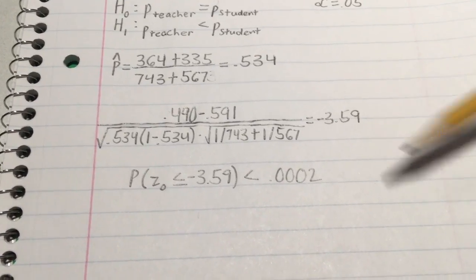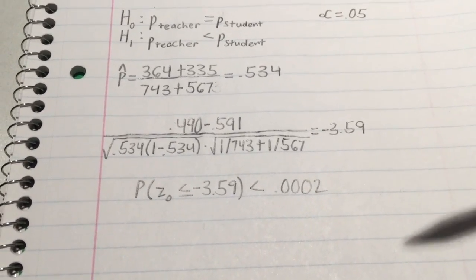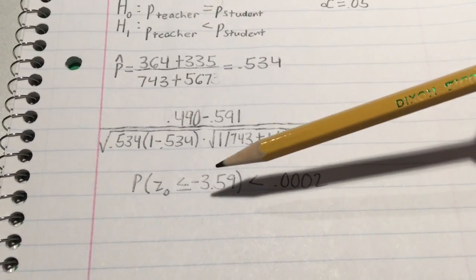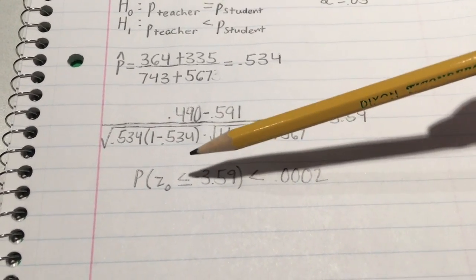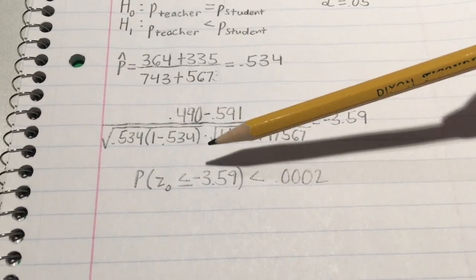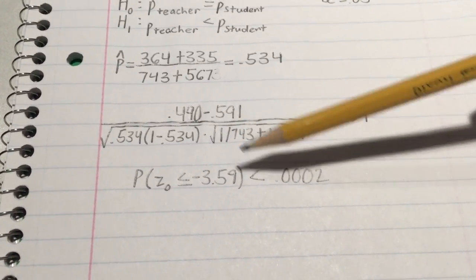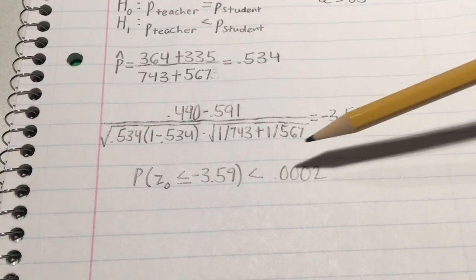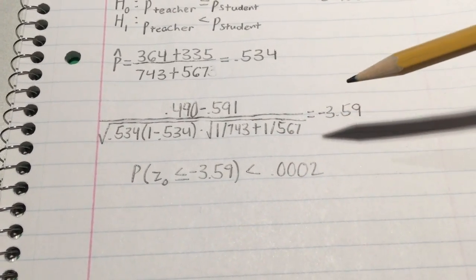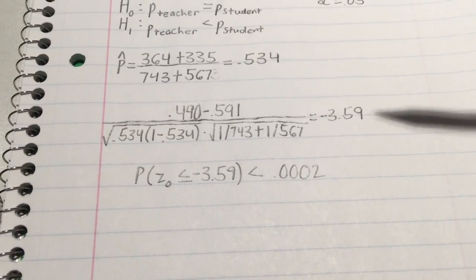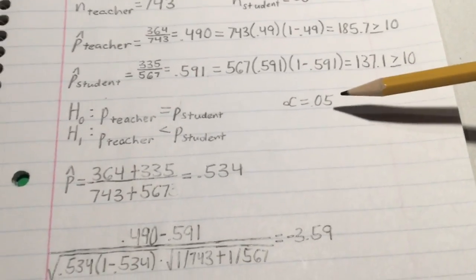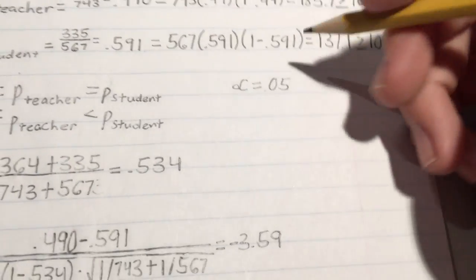The entire thing square rooted and plugged into a calculator, we would get negative 3.59. Using the p-value approach to find our p-value, we would simply find the probability of our z statistic being less than or equal to negative 3.59, which gives us a probability less than 0.0002. Since our p-value is less than the level of significance being 0.05, we would reject the null hypothesis.